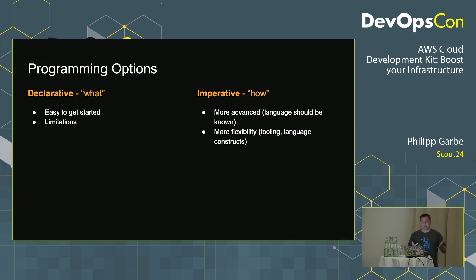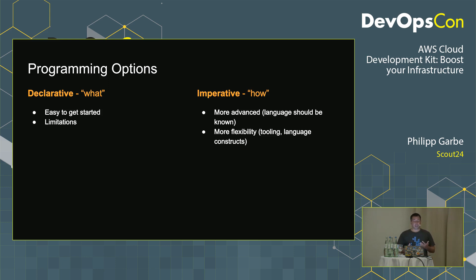There are two different styles of infrastructure as code. The declarative style is probably the most common — it's more about the 'what'. You define what you want; the entry barrier is quite low and it's most likely a YAML or JSON text file that you can more or less easily read. But it has limitations — you cannot do more advanced constructs like loops or inheritance. The imperative way is more about 'how' you achieve that. It's done using higher-level programming languages where you can use the benefits of those languages, like loops and inheritance.